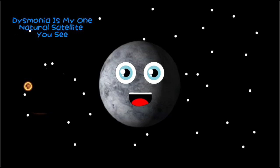Dysnomia is my one natural satellite. It means lawlessness and it is always orbiting me. I'm 27% more massive than Pluto, though Pluto is slightly larger than I am.